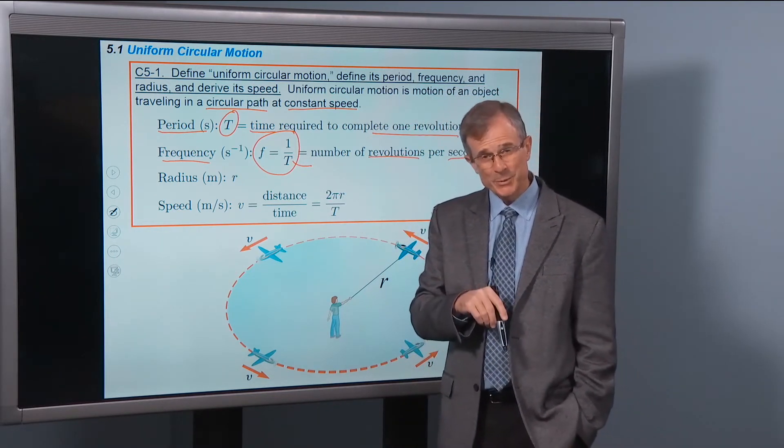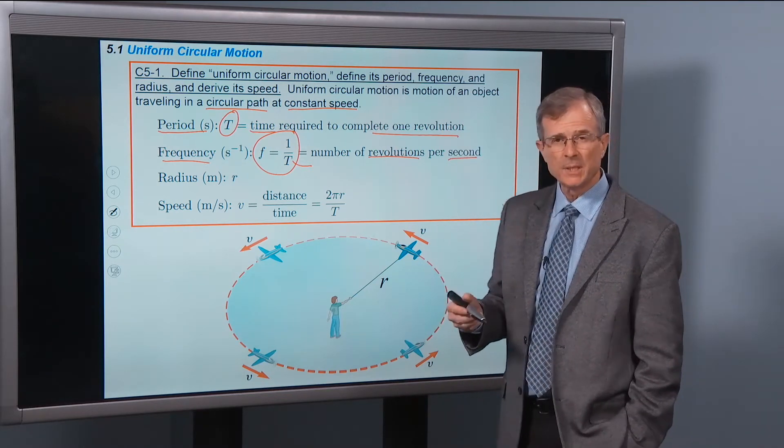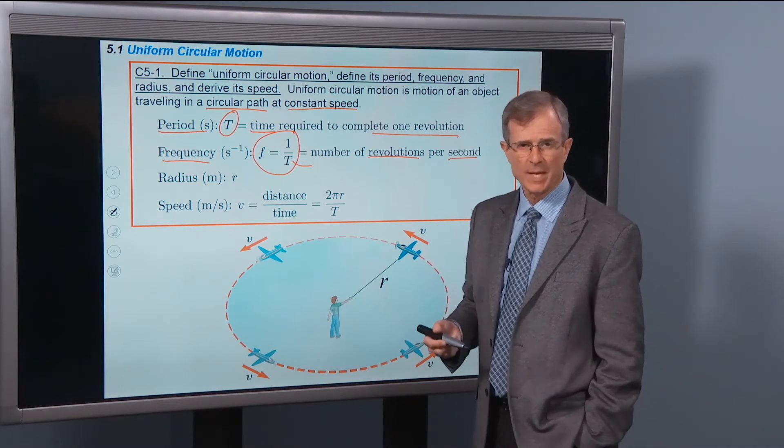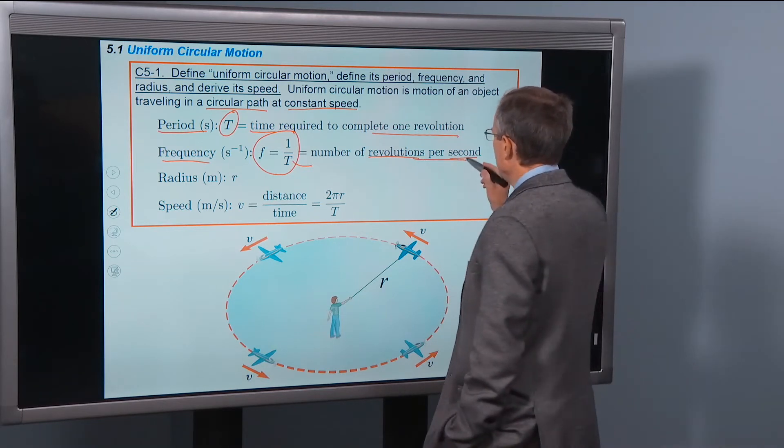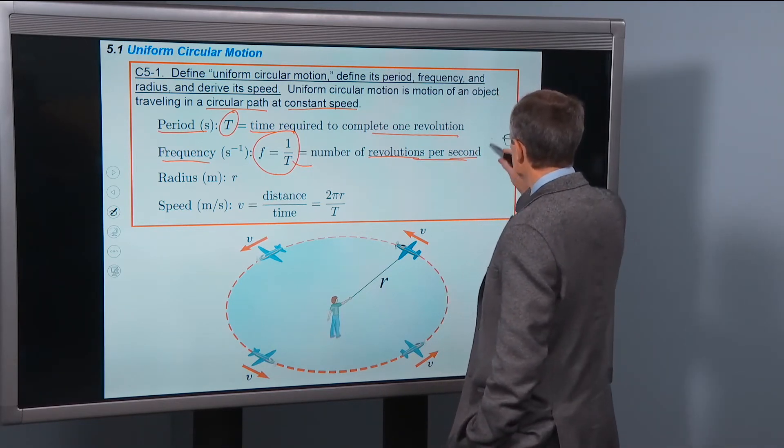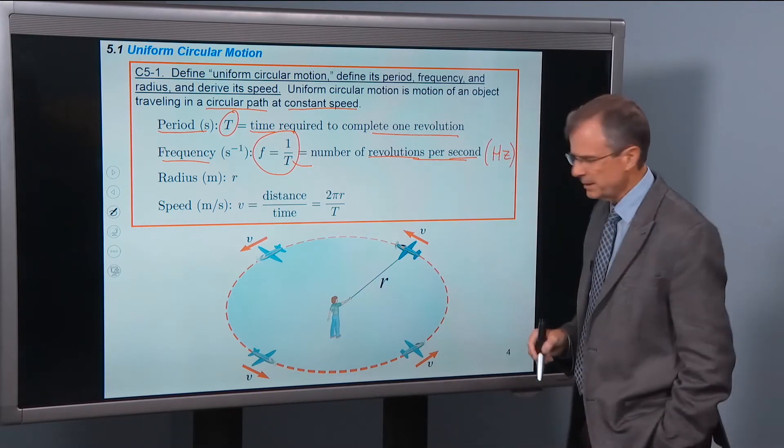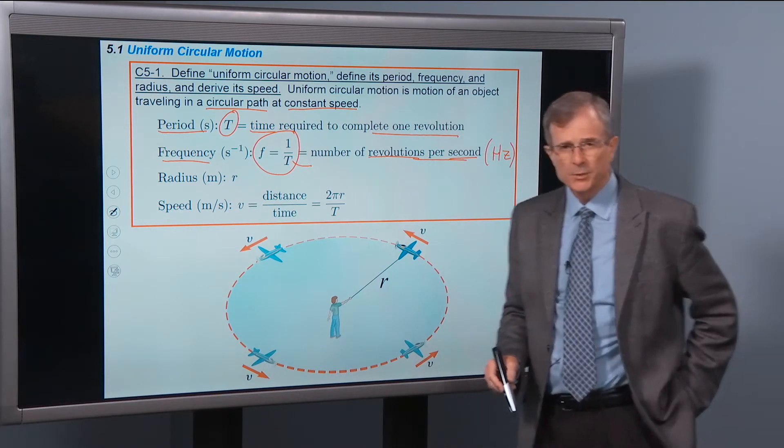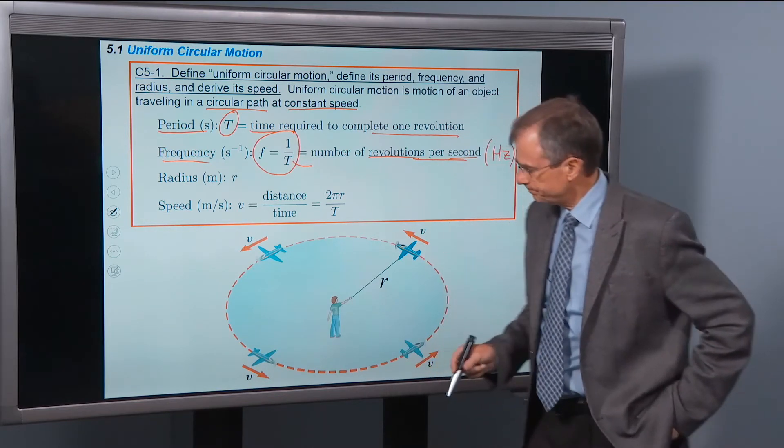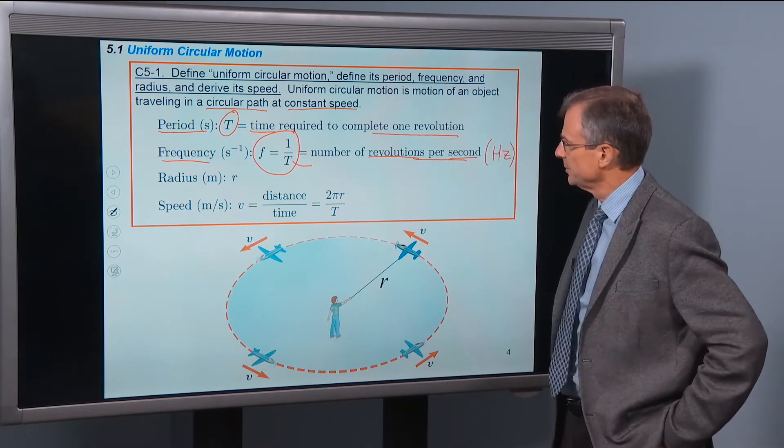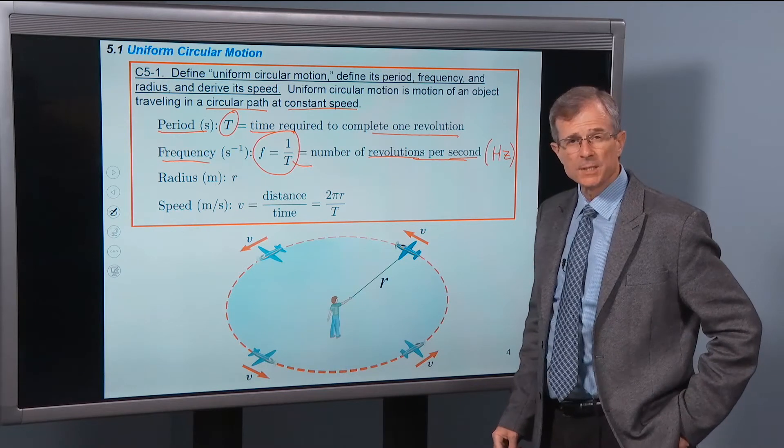Taking 1 over those units. So the period, or the frequency is the number of revolutions per second. And it's 1 over the period. And this is sometimes called the hertz. We won't use that much in this chapter, but in later chapters we'll use hertz to characterize this frequency.